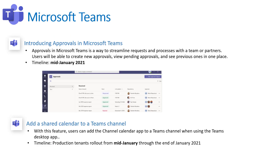They also announced a new app called Approvals. It essentially extends the Power Automate Flow approval workflow into an app itself, so you don't have to go into Flow and build this yourself. It can be used for expense approvals and similar tasks without requiring a third-party solution. Administrators or workflow owners can create those approvals. This goes out mid-January 2021, and as an admin you'll need to go into the Teams Admin Center to publish the application in your environment.